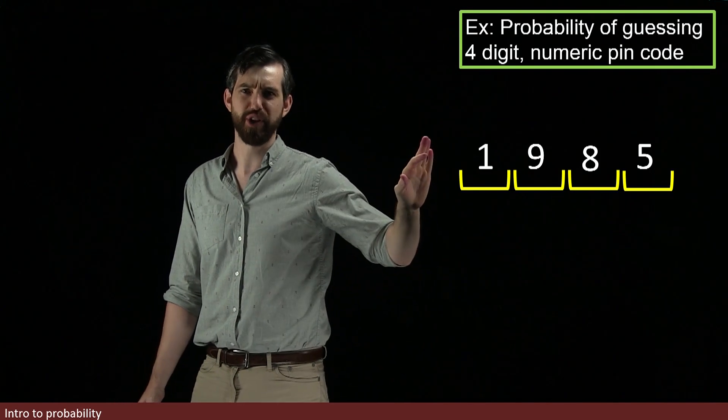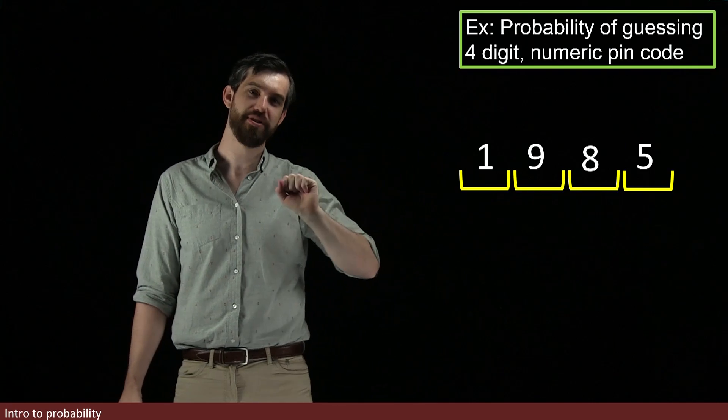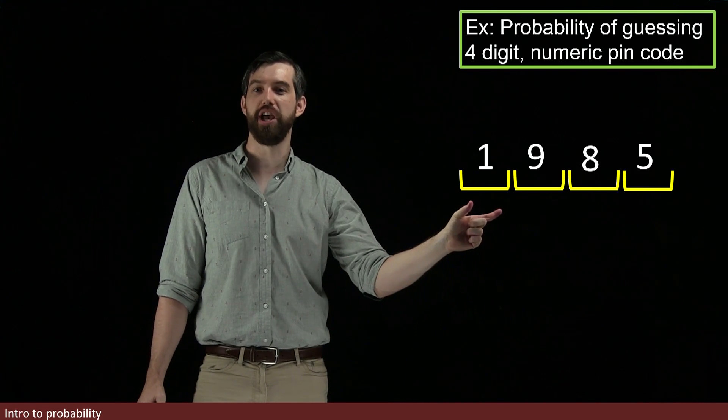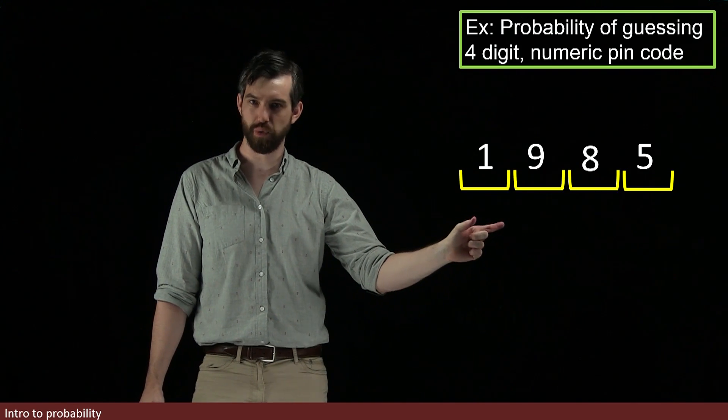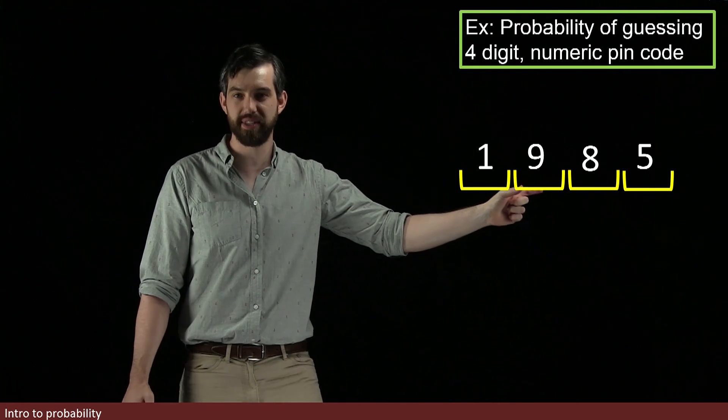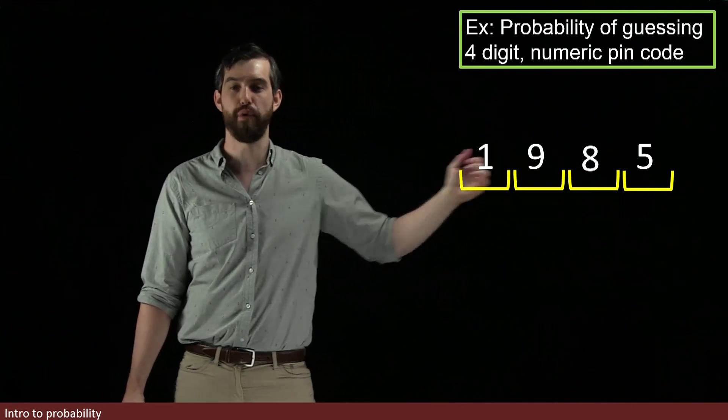By the way, don't use your birth year as a PIN code, that's a terrible PIN code. But the point is that there's some digit between zero and nine in the first one, some digit between zero and nine in the second, some digit between zero and nine, and some digit between zero and nine in each of those four things.